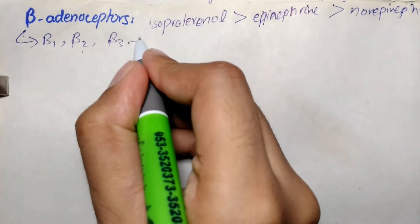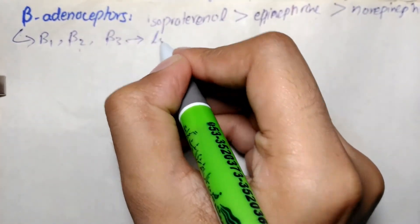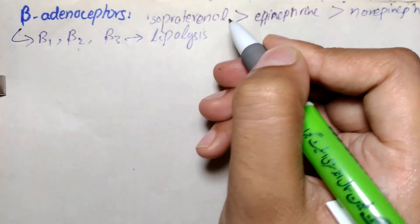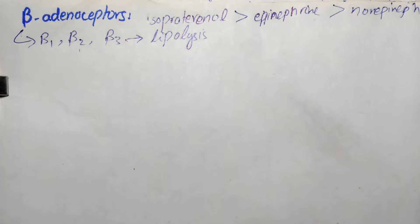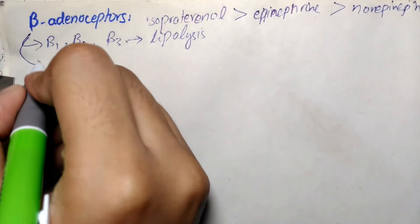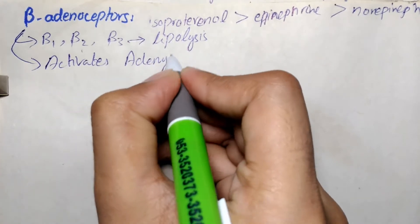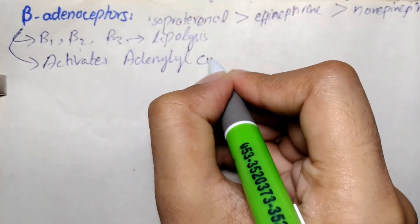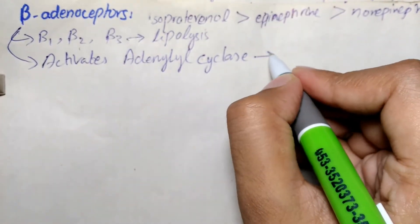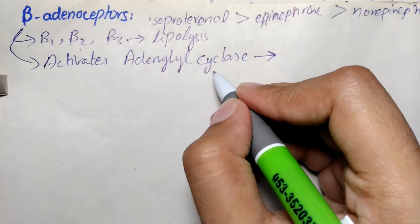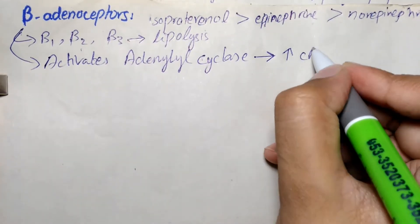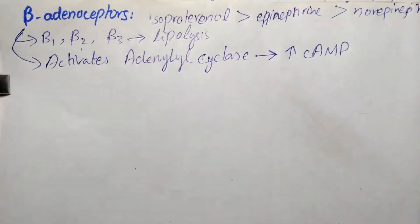Beta 3 receptors are involved in lipolysis — that is, the breakdown of fat — and also have an effect on muscles of the bladder. Binding of a neurotransmitter at any of these three types of beta receptors results in activation of adenylyl cyclase, causing an increase in cyclic AMP levels.